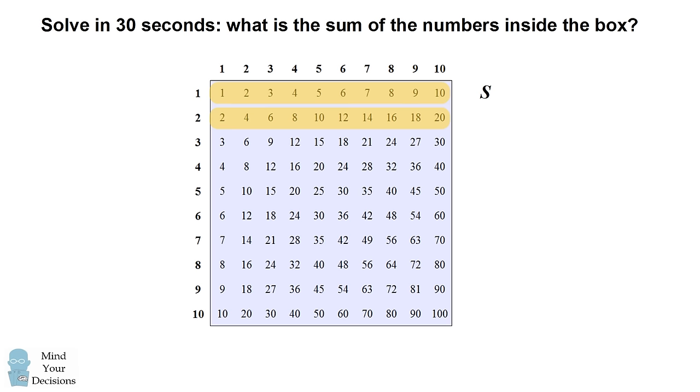Since every number in the second row is twice every number in the first row, the sum of the numbers in the second row will be 2 times s. Similarly, every number in the third row is 3 times every number in the first row, so the sum of the numbers in the third row is 3s.